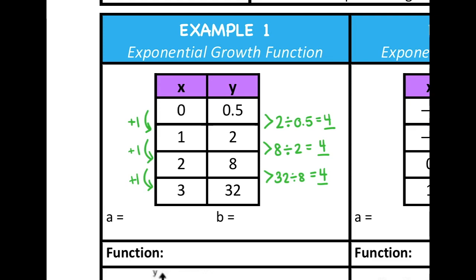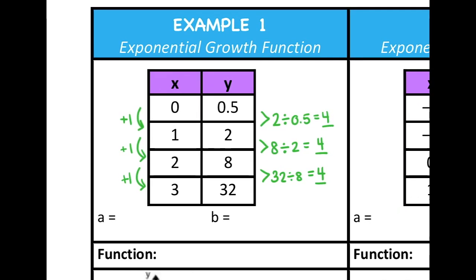So because I got the same value every time I divided the consecutive pairs of y values, I know that is my value for b. So b in this case is 4, and that's my common ratio. And since I just confirmed that there's a common ratio, I know for a fact that the table I'm looking at is a table for an exponential function. Now I need to find the value for a. So a is our initial value, it's our y-intercept. So when I look at the table, wherever I see that x equals 0, then that y value is my value for a.